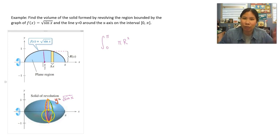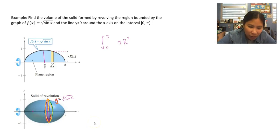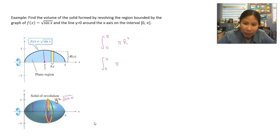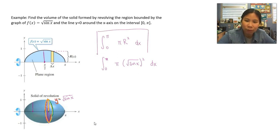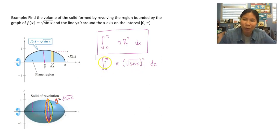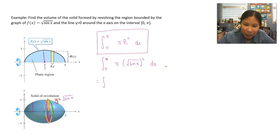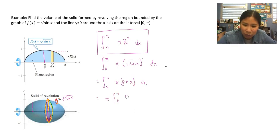That radius constantly changes throughout the shape — if my x value is different, I'd have a different radius. That's why the radius has to be some sort of function. So my setup is an integral from zero to pi of pi times the square root of sine x squared dx. In general, this is the general formula for any equation, where the endpoints differ. For this problem we go from zero to pi, and our radius is square root of sine x. This simplifies nicely because square root of sine x squared is just sine x.